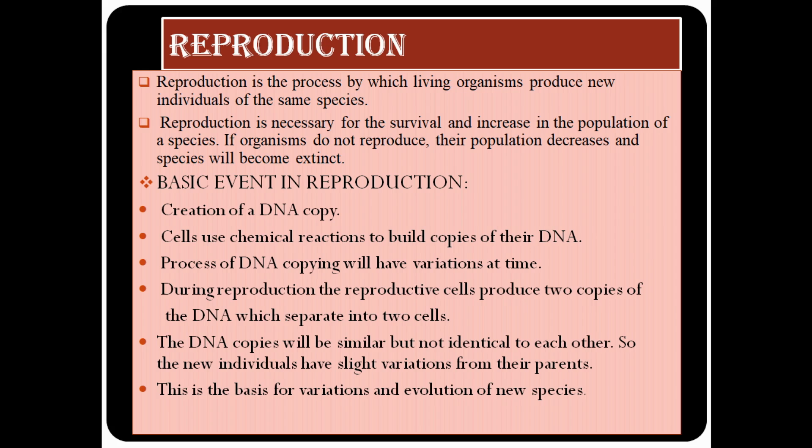Cells use chemical reactions to build copies of DNA. When copies of DNA are produced they can be similar but not identical, which leads to variation and evolution of new species.